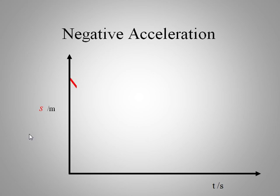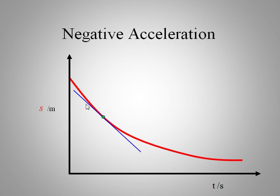What would negative acceleration look like? If we draw a tangent line here, we get a large negative slope. Later on, it becomes more gradual — a smaller negative slope. So the object starts with a higher negative velocity and decreases over time. An example would be you're in a car driving in reverse but stepping on the brake, so you're gradually slowing down in reverse.